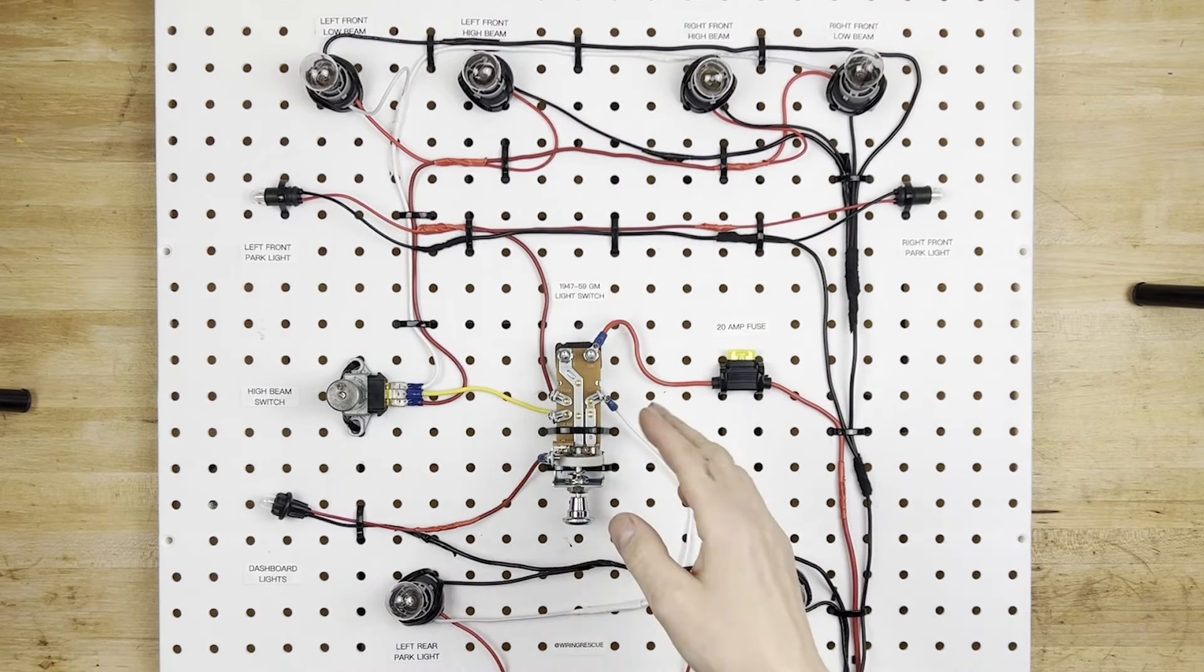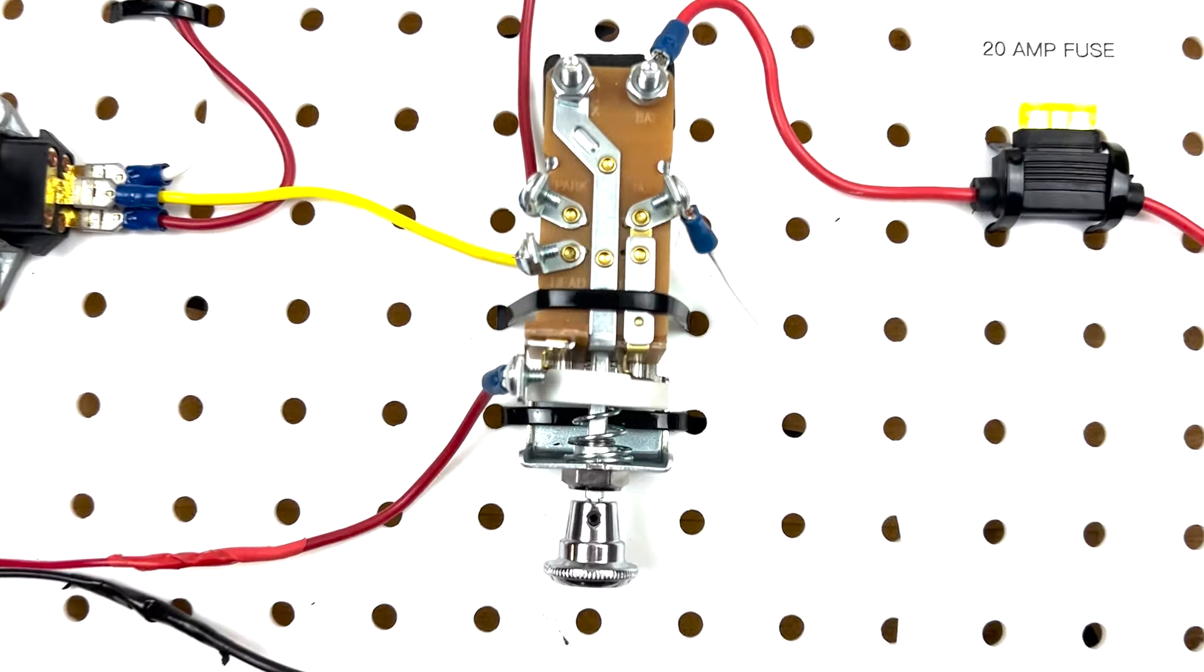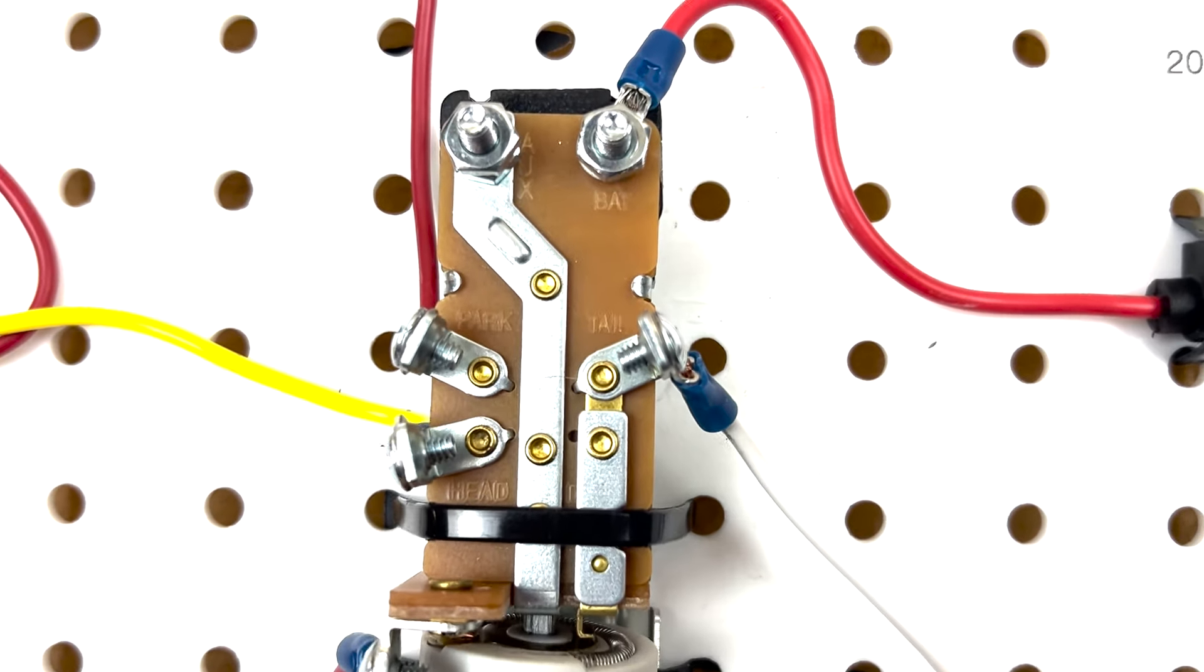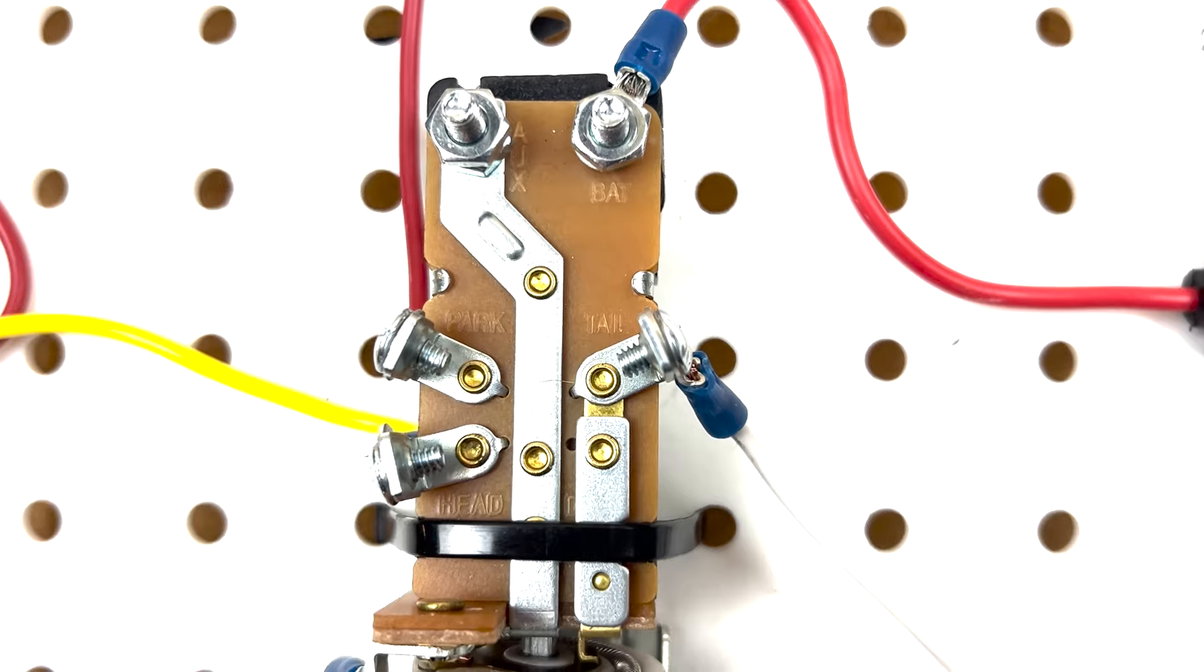Now this headlight switch has six terminals on it. One of them is an input, and all the rest are outputs. Let's start with the input.